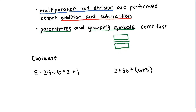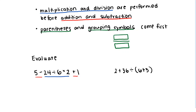Looking at the example on the left — and I encourage you to pause the video and try these first — we should, before doing anything else in this expression, perform the multiplication and division in the middle before dealing with the subtraction and addition. Within that multiplication and division, we perform from left to right, so we should perform the division first, then multiply after, because the division sign is on the left.